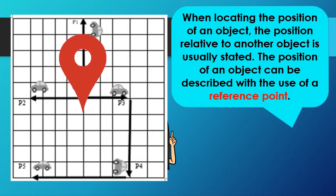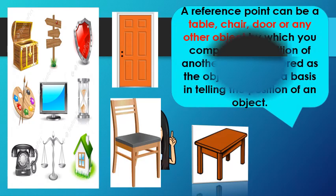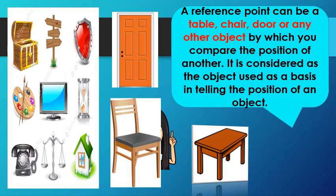Remember, when locating the position of an object, the position relative to another object is usually stated. The position of an object can be described with the use of a reference point. A reference point can be a table, chair, door, or any other object by which you compare the position of another. It is considered as the object used as a basis in telling the position of an object.